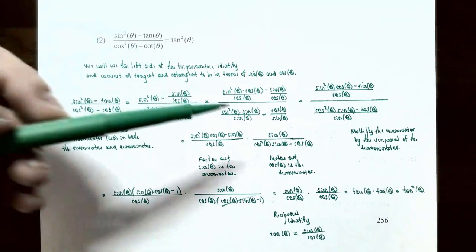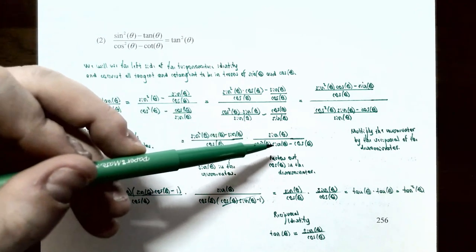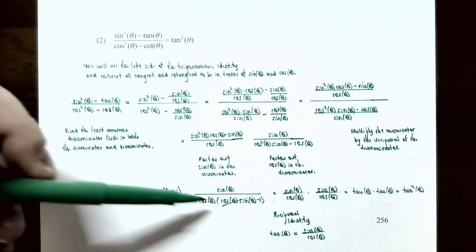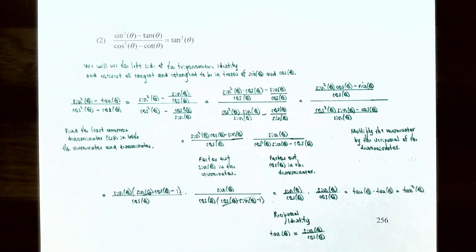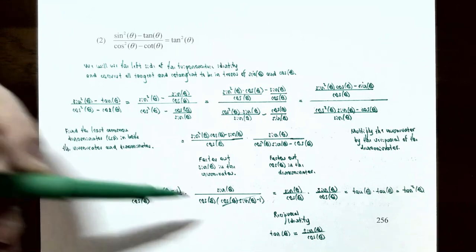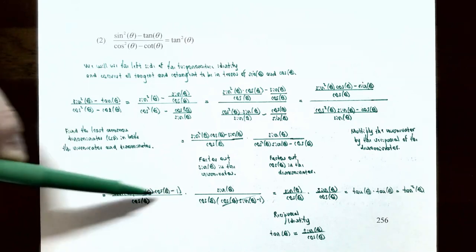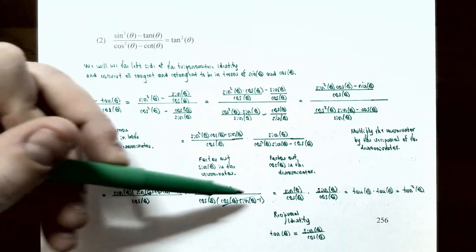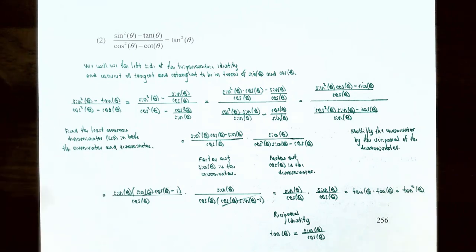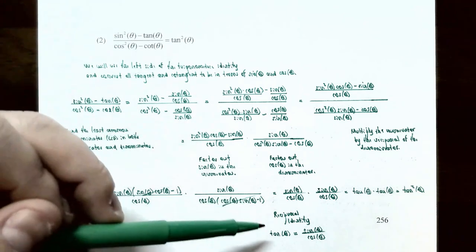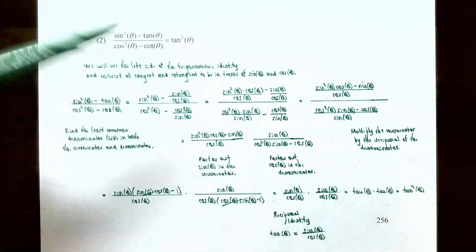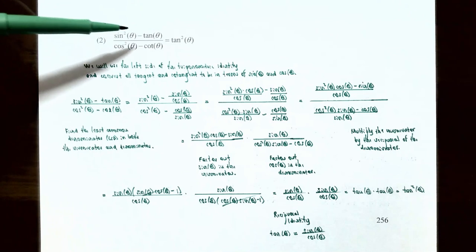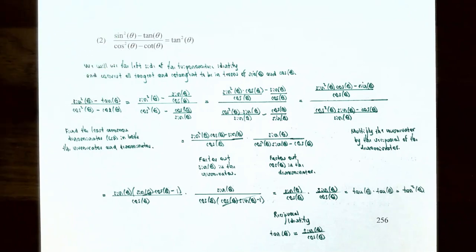In the second fraction, factor cos θ from the denominator: sin θ in the numerator, and cos θ(cos θ · sin θ − 1) in the denominator. Notice that (sin θ · cos θ − 1) in the first fraction and (cos θ · sin θ − 1) in the second are the same factor, so they cancel out. What remains is sin θ / cos θ from the first fraction times sin θ / cos θ from the second — that is tan θ · tan θ = tan²θ, which is exactly the right side of the identity. The identity is proved.